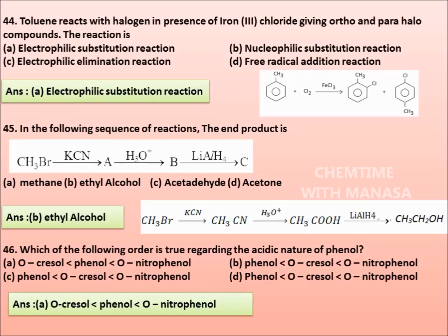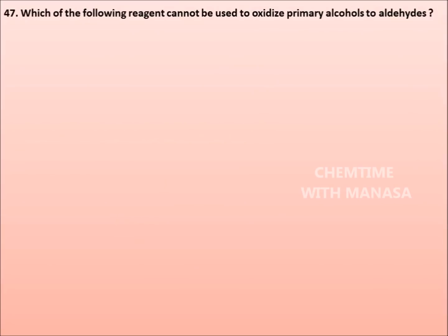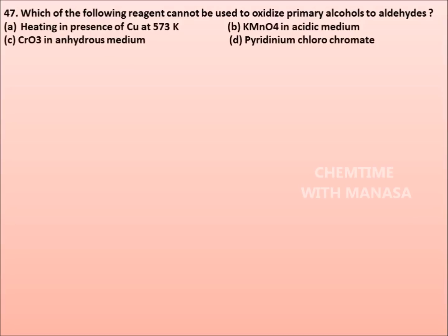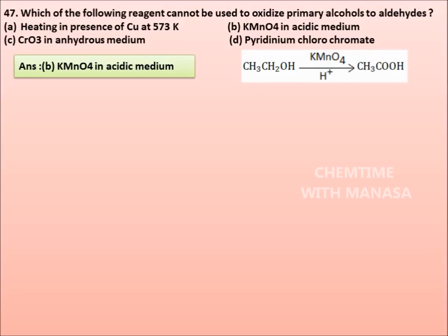Question 47. Which of the following reagent cannot be used to oxidize primary alcohols to aldehydes? Heating in presence of copper at 573 Kelvin, KMnO₄ in acidic medium, CrO₃ in anhydrous medium, pyridinium chlorochromate. Correct answer is option B, KMnO₄ in acidic medium. Because KMnO₄ in acidic medium converts the primary alcohols into carboxylic acids, but not to aldehydes.